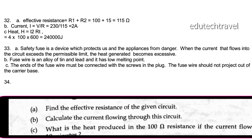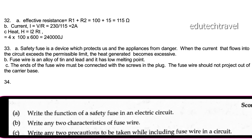Write the function of a safety fuse in an electric circuit. A safety fuse is a device that protects us and appliances from danger. When the current exceeds the permissible limit, the heat generated becomes excessive and the fuse melts. Fuse wire is an alloy of tin and lead with a low melting point. The ends of the fuse wire must be connected with the screws in the plug, and the fuse wire should not project out of the carrier base.